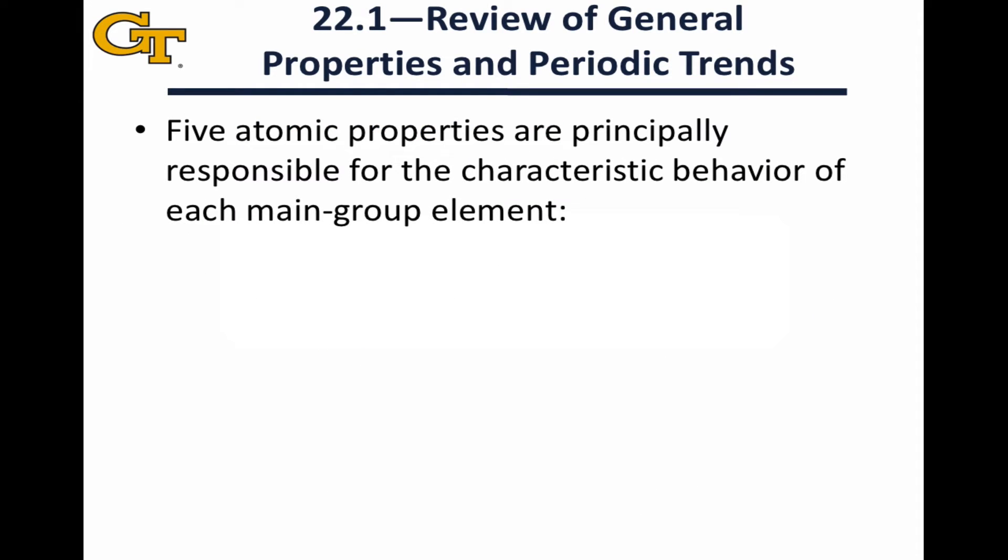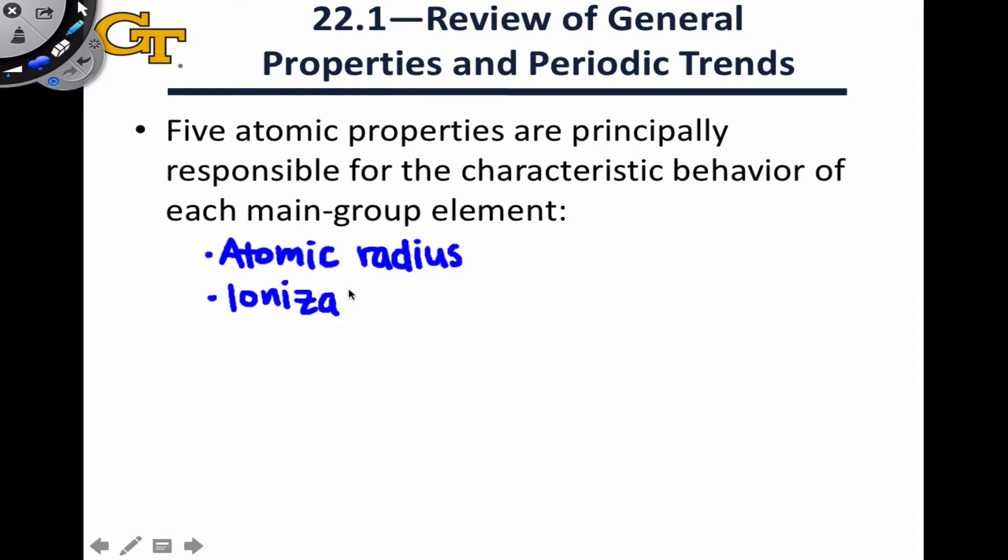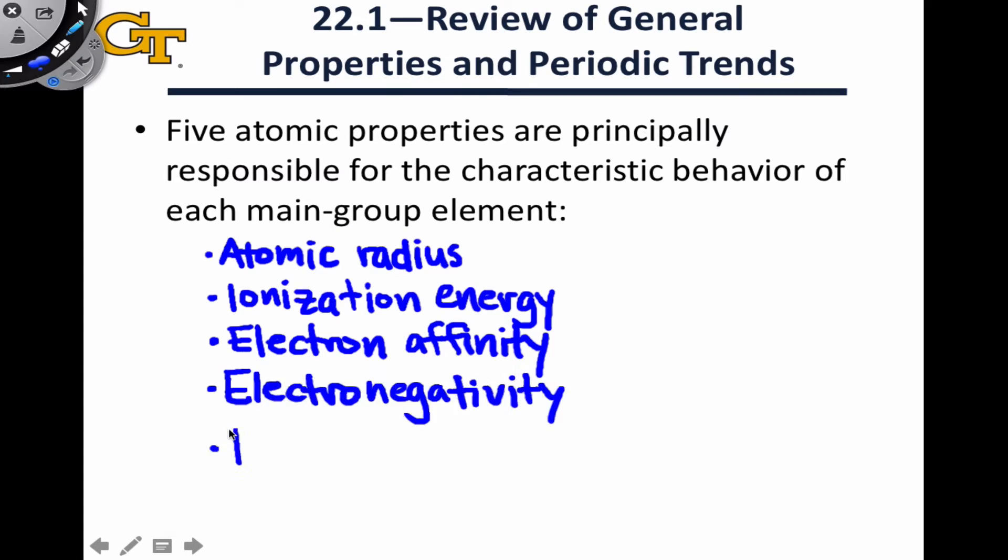There are five properties of the main group atoms that are mainly responsible for the behavior of these elements, and you should be familiar with these terms from previous discussions. We have atomic radius, ionization energy, as well as the related concept of electron affinity, electronegativity, and polarizability.